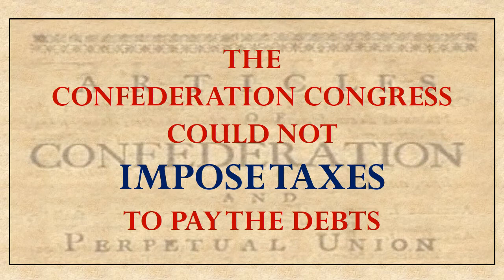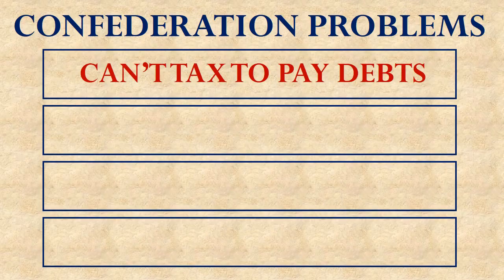And the state of Georgia would say, 'No, we need our money for our own things. We're not going to give you any money.' And so the Articles of Confederation Congress was impotent. They had no power to go get what they needed in order to pay off the debts. That gives us our first big problem with the Articles of Confederation: they couldn't tax to pay off the debts that they owed.